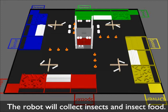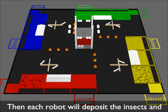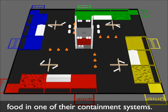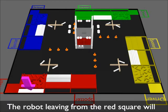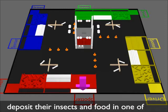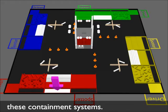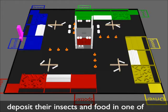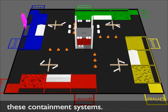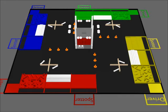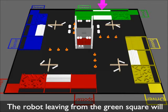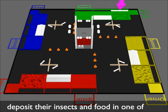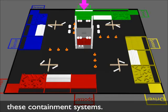The robot will collect insects and insect food. Then each robot will deposit the insects and food in one of their containment systems. The robot leaving from the red square will deposit their insects and food in one of these containment systems. The robot leaving from the blue square will deposit their insects and food in one of these containment systems. The robot leaving from the yellow square will deposit their insects and food in one of these containment systems.